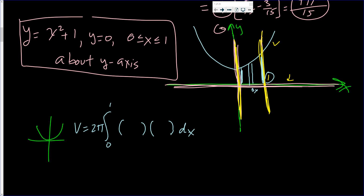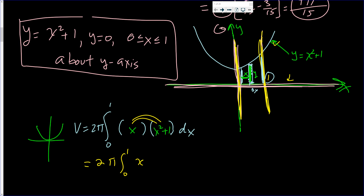What is the radius? When you rotate this around the y-axis, the radius is x. And the height is defined by y = x² + 1; the height is the y-value, which is x² + 1.